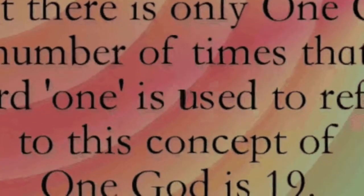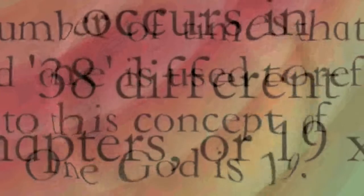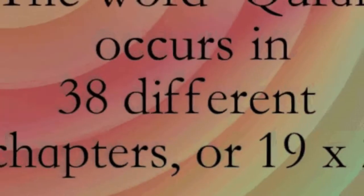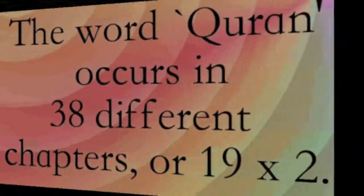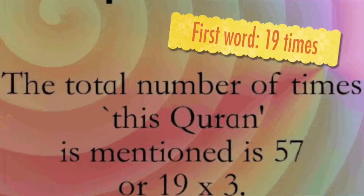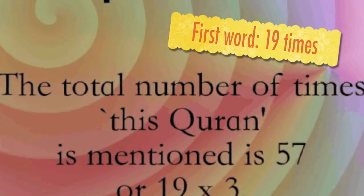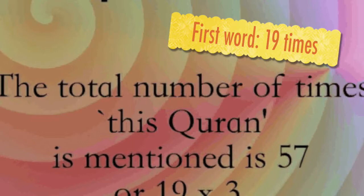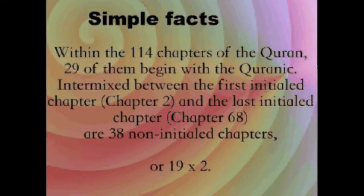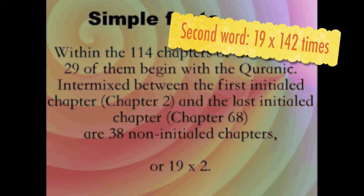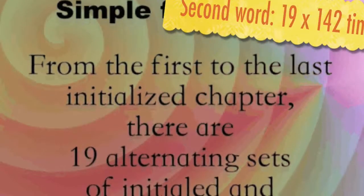13. Fifth revelation, chapter 1, placed the 19 lettered opening statement immediately after the number 19 of 74:30. 14. First word in the opening statement occurs in Quran exactly 19 times. 15. Second word in the opening statement, Allah occurs 2,698 times, a multiple of 19, 19 times 142.